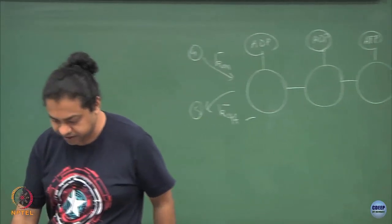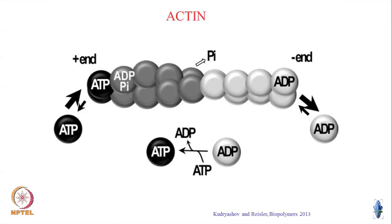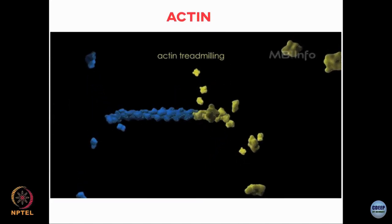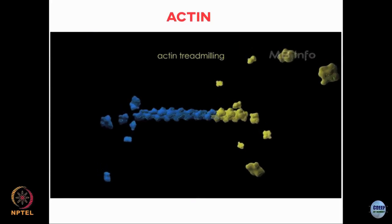That is the phenomenon of treadmilling. On average, things are being added at the plus end and on average things are being removed from the minus end. This globular actin comes with ATP, it binds, the ATP then hydrolyzes to form ADP and phosphate is released. In the interior of the filament most actins will have ADP bound. When stuff dissociates from the minus end, you get globular actin with ADP bound, which in solution converts back to ATP-actin and comes to bind again. So it is a cyclical process — actin treadmilling where things on average add at the plus end and dissociate from the minus end.